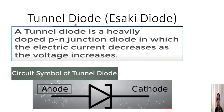The tunnel diode is also called the Esaki diode. As the name suggests, it is a P-N junction diode, but its key property is the negative resistance property — that is, the electric current will decrease as the voltage increases. This is the basic principle of a tunnel diode, and the circuit symbol is as shown.